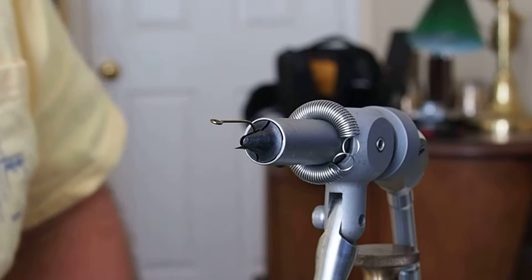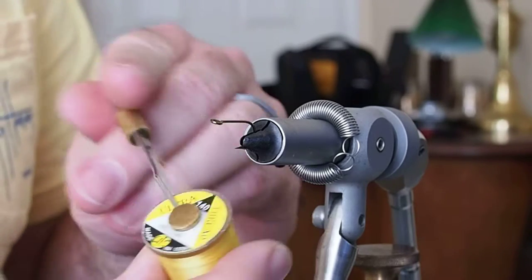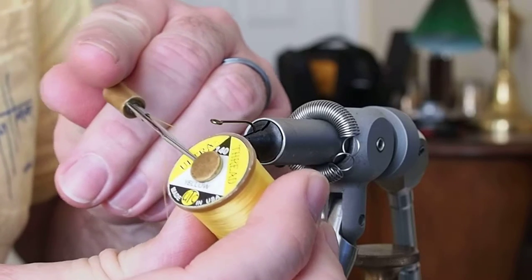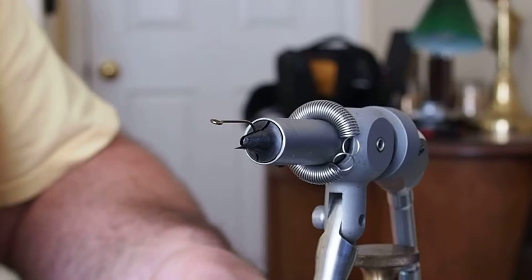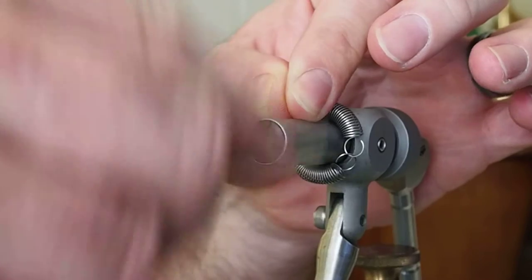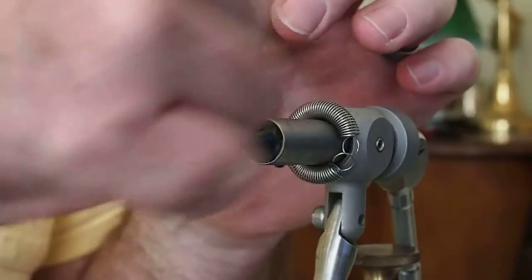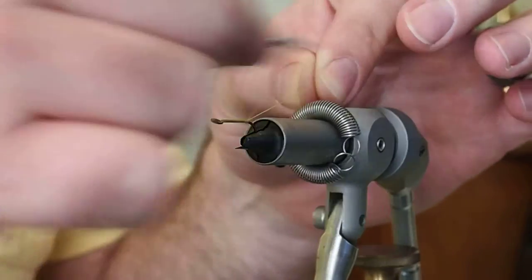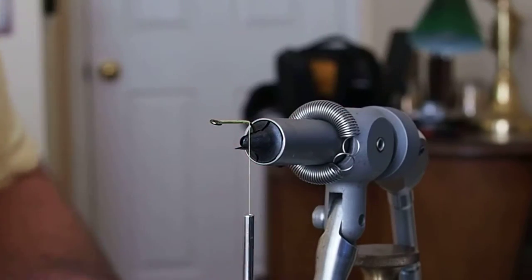I'm going to be tying this on a Mustad 3366A hook and I'm going to be using what looks like UTC Ultra Thread in 140. First off I'm going to lay down a base thread, take it all the way about to the bend of the hook.